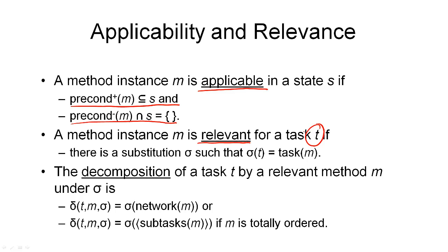And the method is relevant for a task if there is a substitution σ such that the task that we're trying to accomplish is the same as the task described in the method. Remember, the task of a method describes what we can accomplish with that method. And if we have a task t in a task network that we can make the same with a substitution σ as the task of the method, then we can use this method to accomplish the task and the method is relevant for the task.